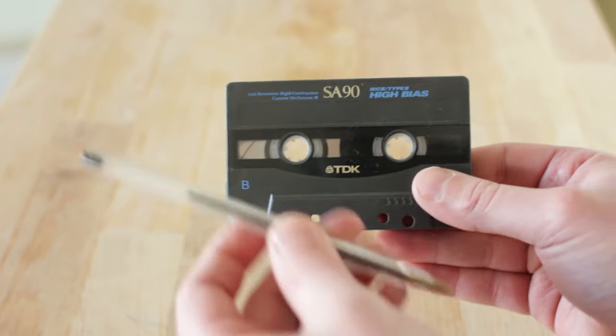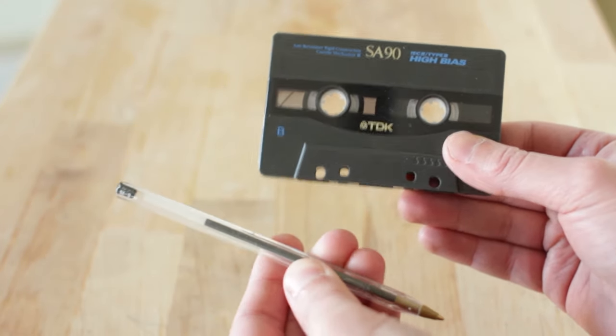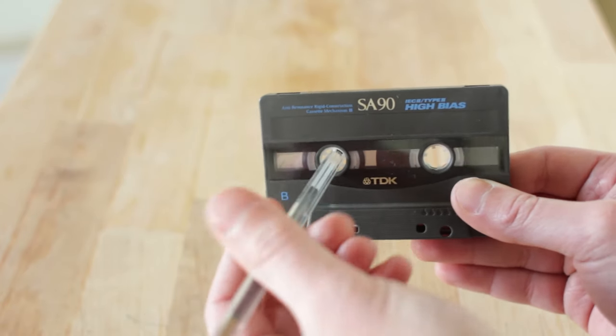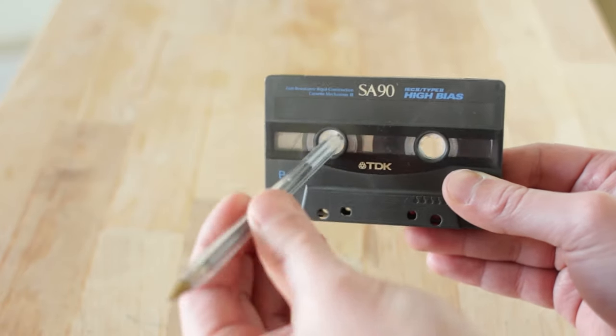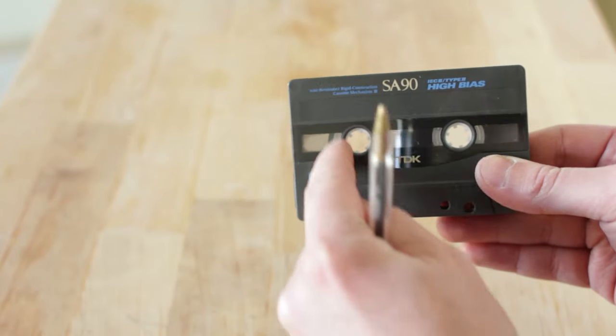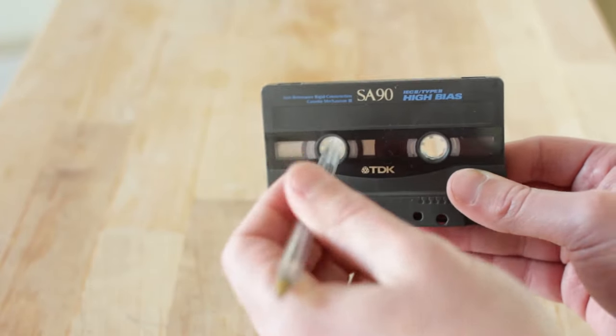So what you can do, you get a pen like this, or a pencil will work as well, and you put it in like that so that it catches the gears inside the tape and you wind it back. You want to wind it back this way because it'll roll in this way to get all that tape to the other side.